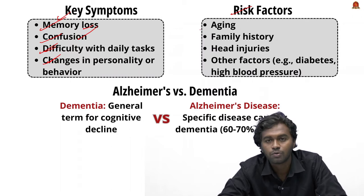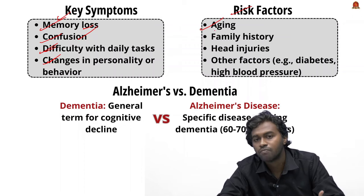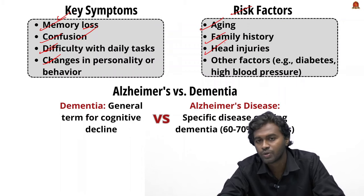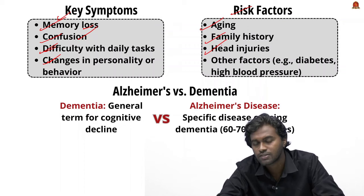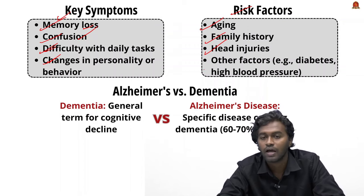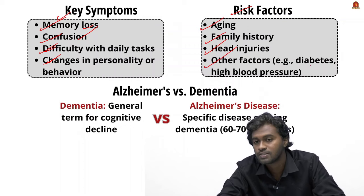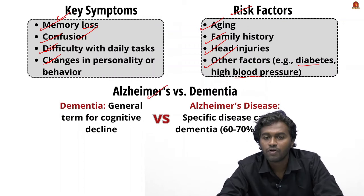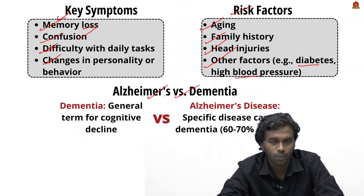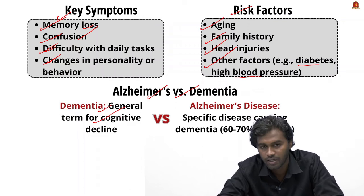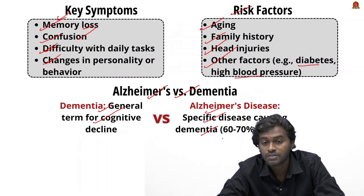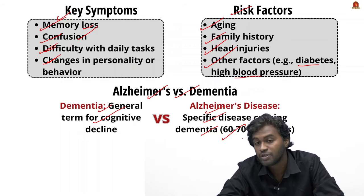Risk factors for Alzheimer's include aging, family history, head injuries from accidents, and non-communicable diseases such as diabetes and high blood pressure. What is the difference between Alzheimer's and dementia? Both are brain disorders, but dementia is a general term for cognitive decline, while Alzheimer's is a specific disease that causes dementia. Alzheimer's is the reason behind 60 to 70% of all dementia cases.